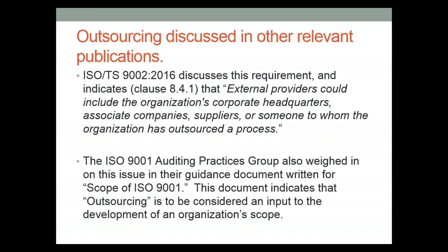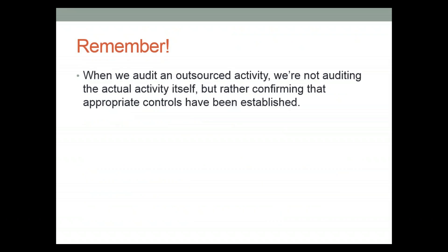Outsourcing is also discussed in a couple of other relevant publications. In Guidance Standard 9002, it states that external providers could include the organization's corporate headquarters, associate companies, suppliers, or someone to whom the organization has outsourced a process. The Auditing Practices Group has an official guidance document called 'Scope of ISO 9001,' indicating that outsourcing is to be considered an input to the development of the organization's scope. When we audit an outsourced activity, we're not auditing the actual activity itself, but rather confirming that appropriate controls have been established.